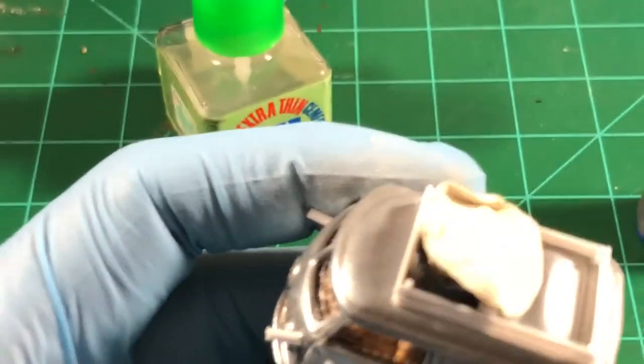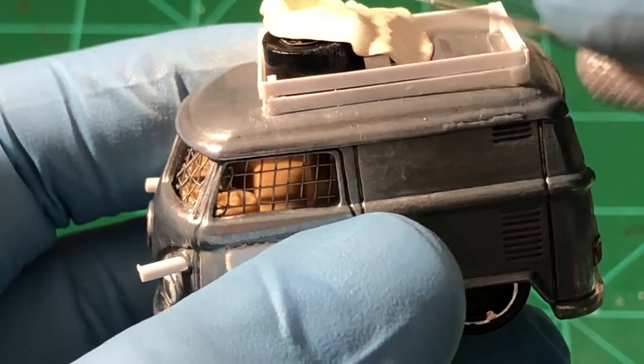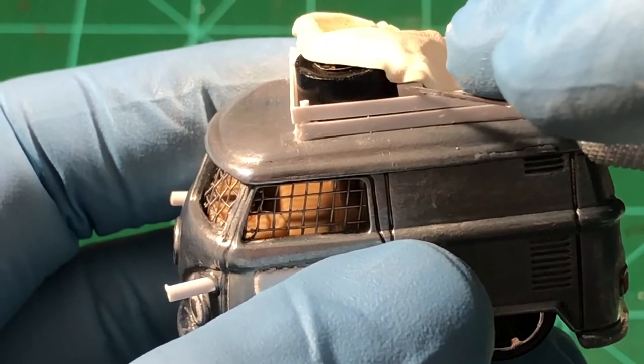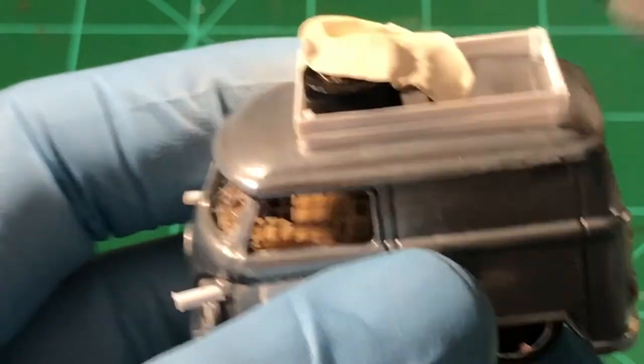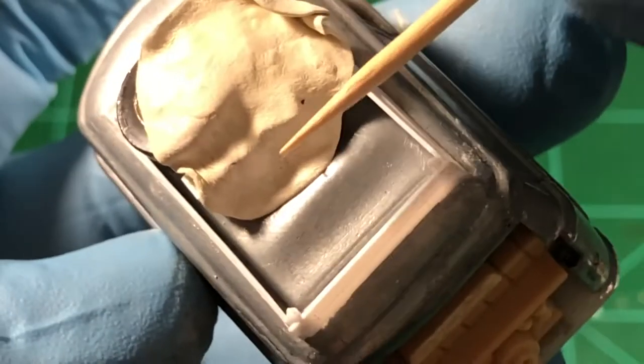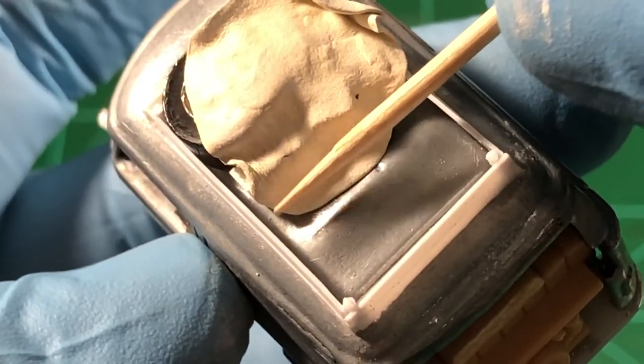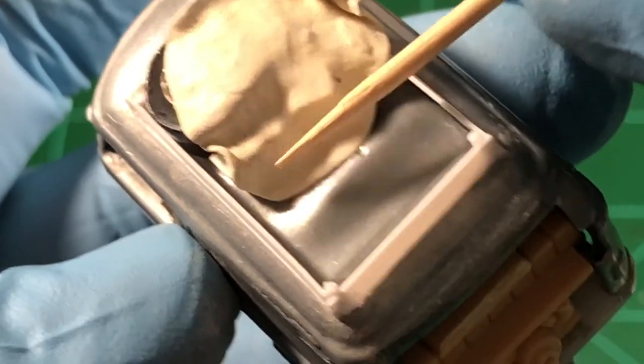Some of the tools we can use are an X-Acto knife, and we will begin to expose the gear inside with it. Another tool you can use to create folds and impressions in the tarp is a toothpick. You can see here I am using it and the tarp is beginning to take shape.